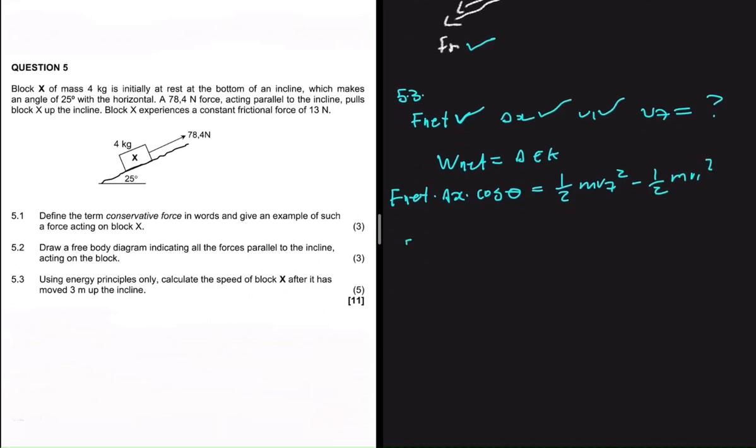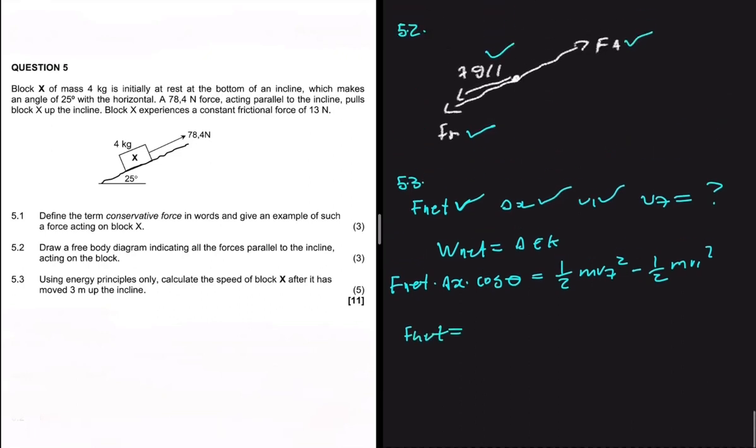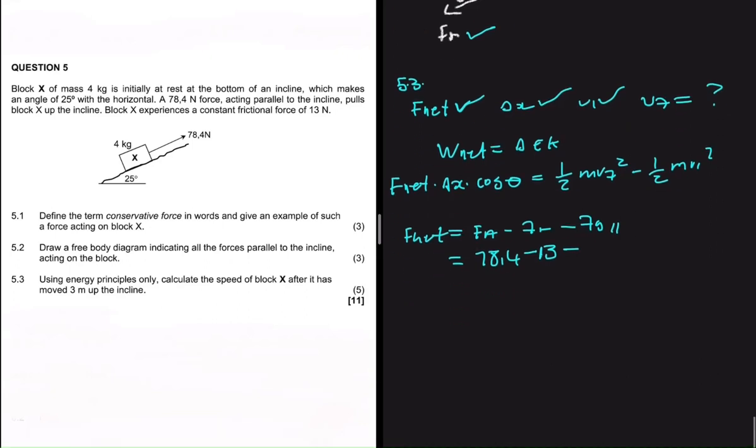So let's go ahead and find f_net. We can say that f_net equals the force applied minus the frictional force minus fg parallel. We're doing all that so we can find the f_net. For applied, it is said to be 78.4 and then the frictional force is 13 newtons.